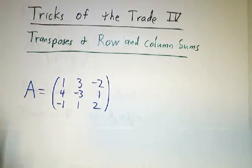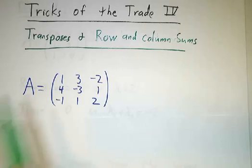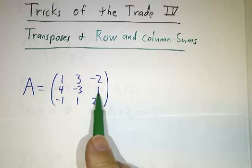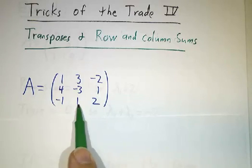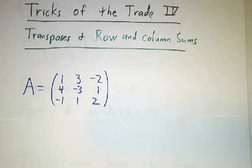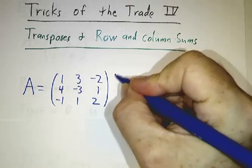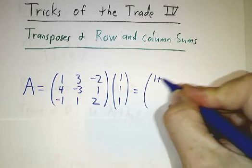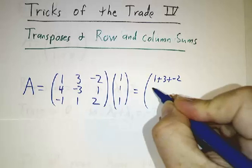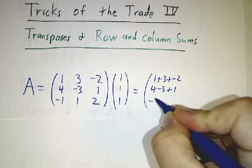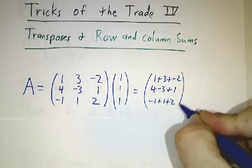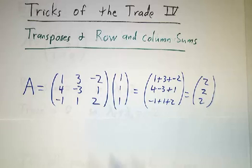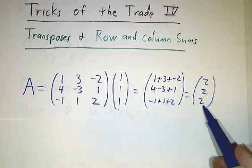The idea about column sums is the following. Take a look at this matrix — you'll notice that each column adds up to 2. 1 plus 3 plus negative 2 makes 2; 4 plus negative 3 plus 1 is 2; negative 1 plus 1 plus 2 is 2. So if you multiply this matrix by [1, 1, 1], you get [2, 2, 2]. So [1, 1, 1] is an eigenvector with eigenvalue 2.